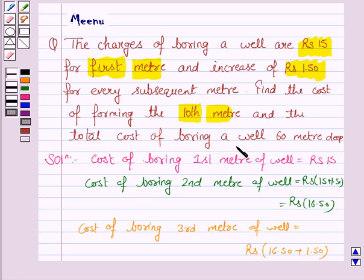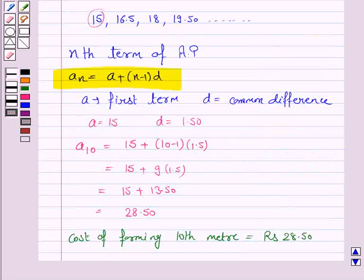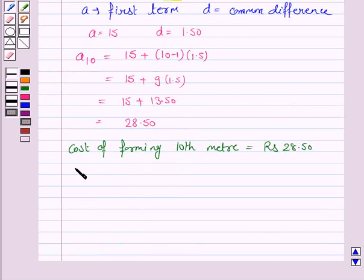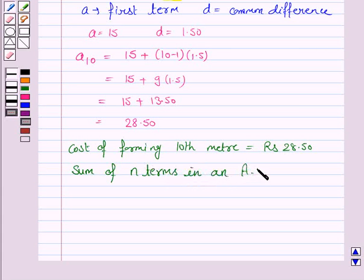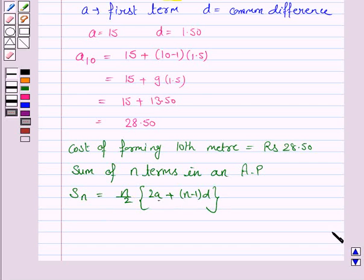Next, we have to find the cost of boring a well 60 meters deep, that is the total cost. These are the costs of boring each subsequent meter, so we have to find the sum of 60 terms in this AP. The sum of n terms in an AP, denoted by Sₙ, is given by n by 2 into (2a plus n minus 1 into d), where n is the number of terms, a is the first term, and d is the common difference.